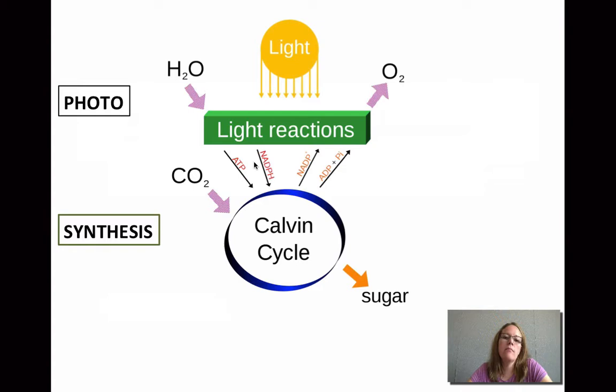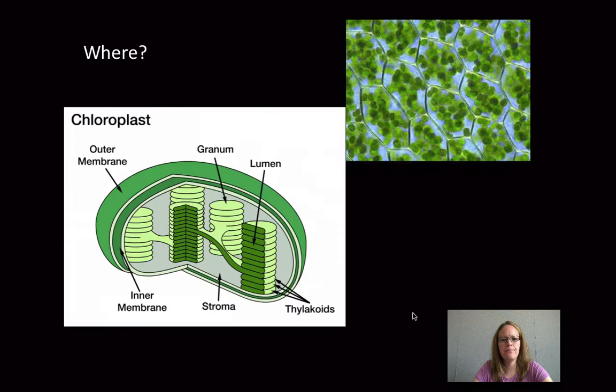In the light reactions, we're going to produce ATP, a very important energy molecule, as well as NADPH. These are then moved into the synthesis part of photosynthesis, into the Calvin cycle with some CO2 that comes in. And then finally, we create sugar, glucose, or anything that the plant needs to survive to build cellulose and other key components of the plant.